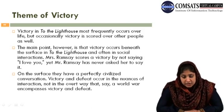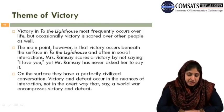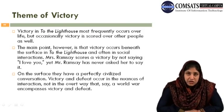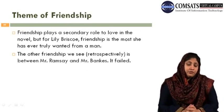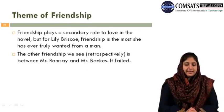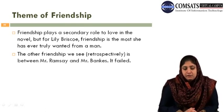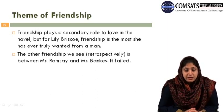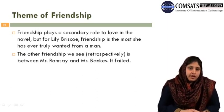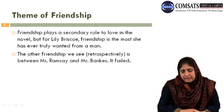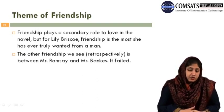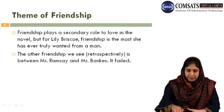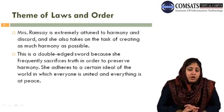Victory and defeat occur in the nuances of interaction, not in the overt way that, say, a world war encompasses victory and defeat. Friendship plays a secondary role to love in the novel, but for Lily Briscoe, friendship is the most important thing she ever truly wanted from a man, and she maintains it till the end. The other friendship we see retrospectively is between Mr. Ramsay and Mr. Banks, but that failed. The theme of law and order: Mrs. Ramsay is extremely attuned to harmony and discord and takes on the task of creating as much harmony as possible — a double-edged sword because she frequently sacrifices truth in order to preserve harmony.